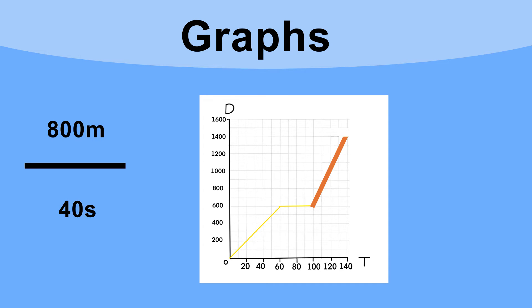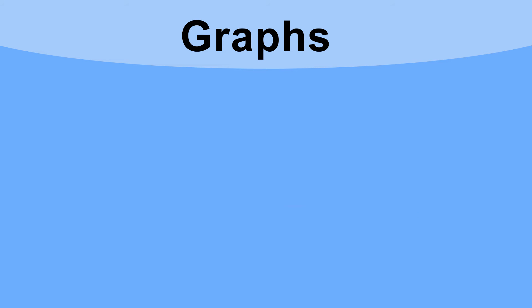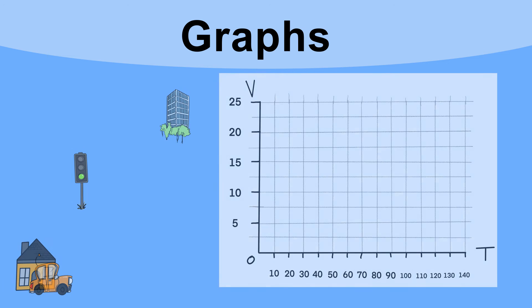So the average speed here is the distance divided by the time. So it's 800 divided by 40, which equals 20 meters per second. We can also see when the line is flat, that shows us the car is not moving. OK, well, what about a similar journey for a velocity-time graph?